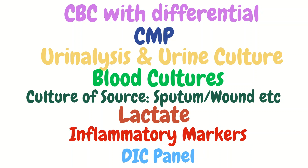The most important thing to remember is source control. Finding the source of the infection is crucial, especially when the patient is showing no signs of improvement. The worst outcomes occur when we are unable to find the source. Is it coming from a skin infection somewhere on the body? Have you turned the patient and looked everywhere? Is it possibly coming from a Foley catheter, a central line, a PICC line, a nephrostomy tube, or a dialysis catheter? You have to find that infection.